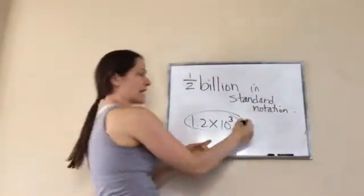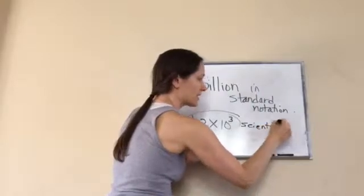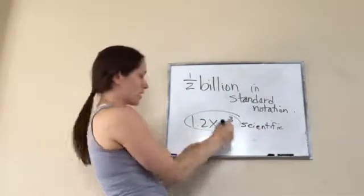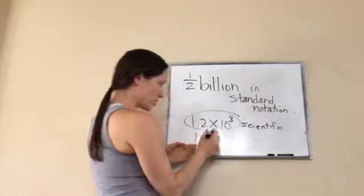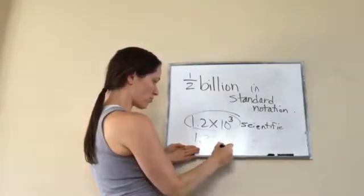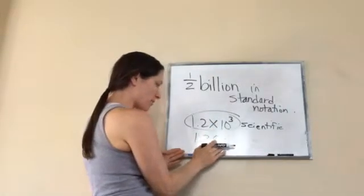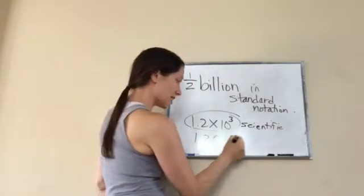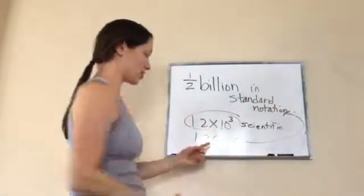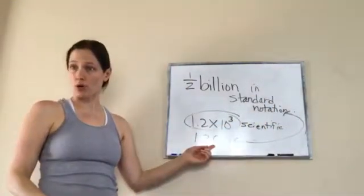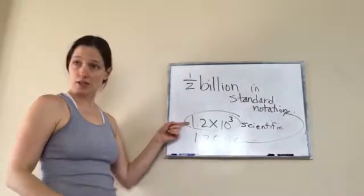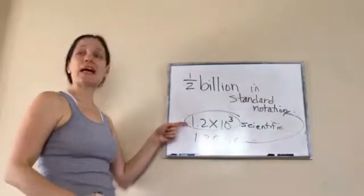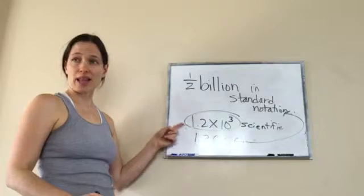Scientific notation is this. And then 1.2, if I did this problem, would be 1, 2, 3. Okay. That's my new number. This is standard notation. It's a normal number. So, you see the difference? Standard notation, scientific notation. That's how they label it.